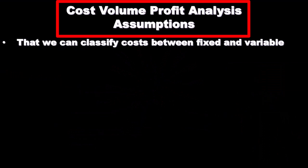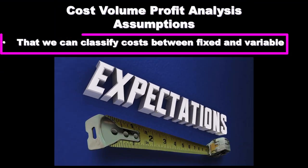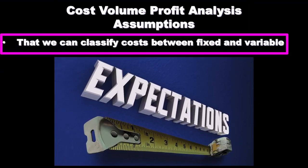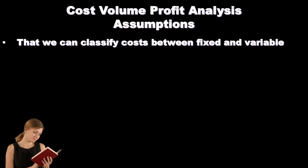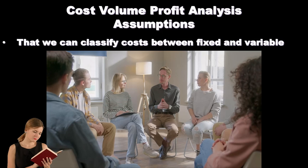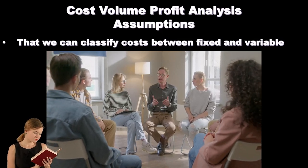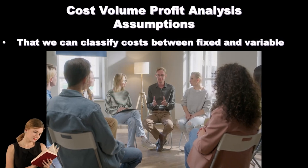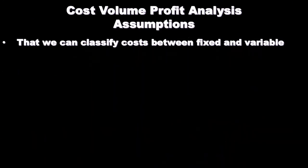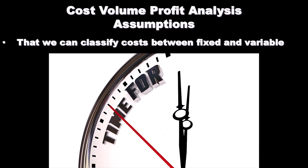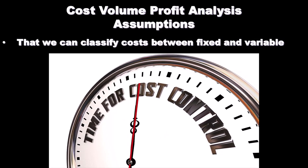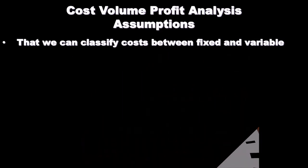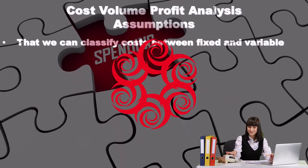Some of the assumptions we have — and we've pointed these out along the way — is that we can classify costs between fixed and variable costs. This is the first primary assumption in managerial accounting with cost volume profit analysis. We say we're not going to group things by what they do for us in terms of expenses; we're going to group them by the behavior of the cost. Do they act as a variable cost? Do they act as a fixed cost? Because that allows us to break out our income statement into a contribution margin income statement — sales minus variable costs — and then think about fixed costs as a separate section.